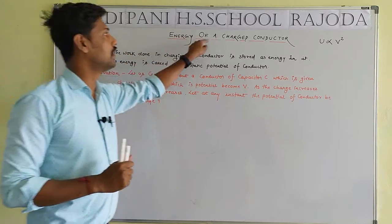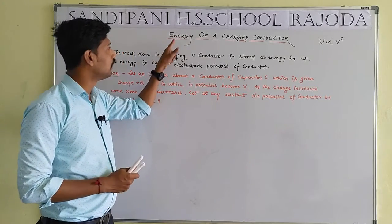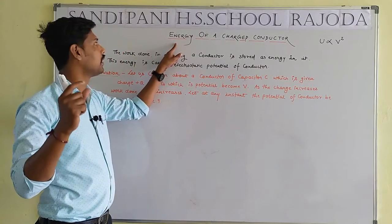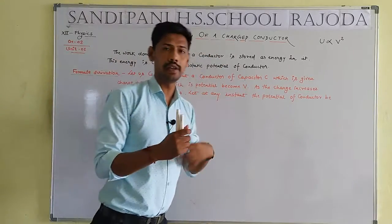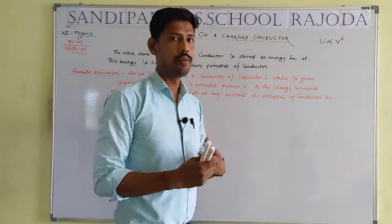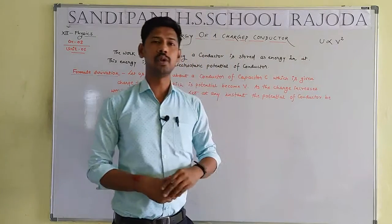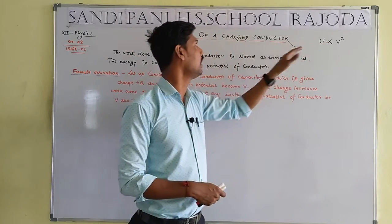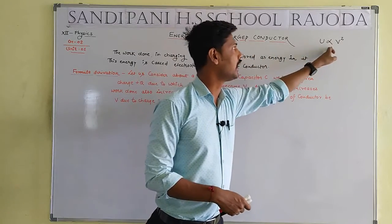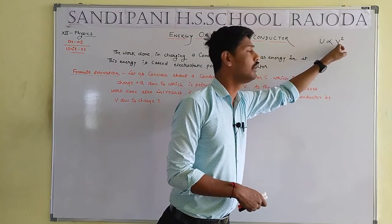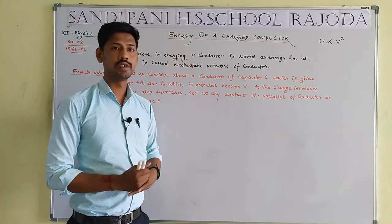The question is: Energy of a charged conductor. We have to make a derivation to determine the energy of a charged conductor. In the board exam, the question is: U is directly proportional to V square. Here U means the energy of a charged conductor, which is directly proportional to the square of potential difference.